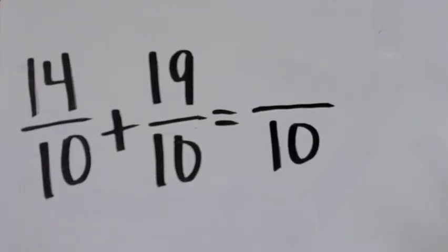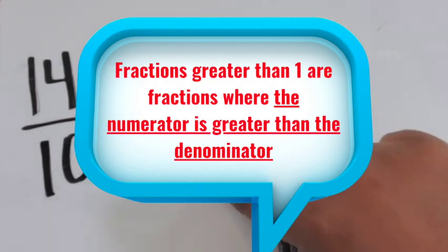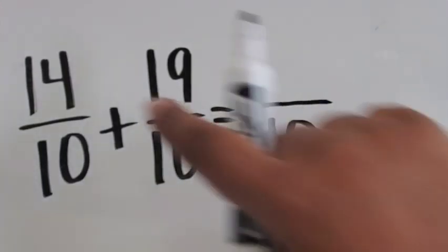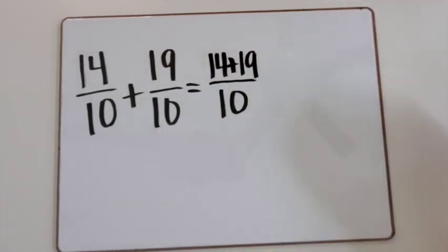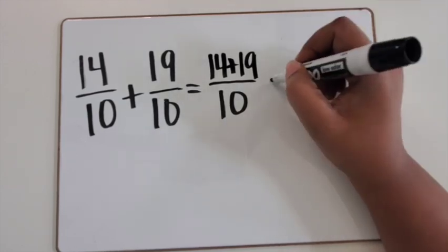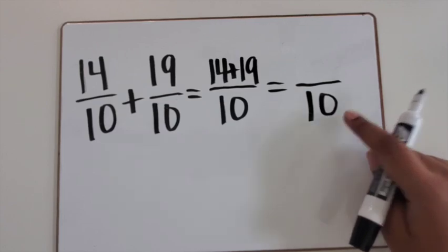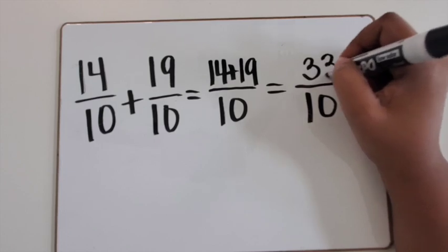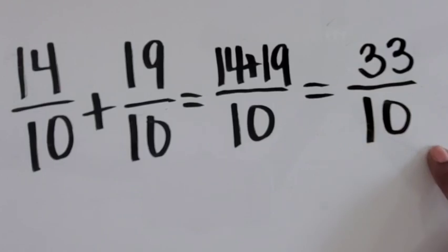Here we have 14 tenths — yes, we know this is a fraction greater than one — and 19 tenths, another fraction greater than one. How many tenths will we have altogether? Let's rewrite it, joining those two numerators together: 14 tenths plus 19 tenths. Whatever our sum is, we know the denominators will still be tenths. So 14 plus 19 is 33 — 14 tenths plus 19 tenths is 33 tenths.